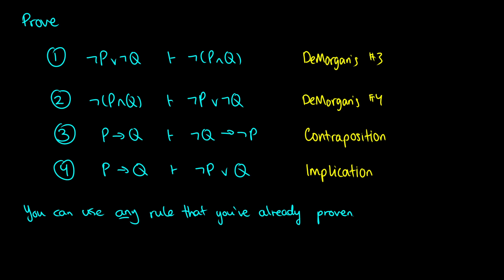In this video we're going to prove a few more derivable rules using pretty much anything we've done before. We can use modus tollens, hypothetical syllogism, disjunctive syllogism, or any of DeMorgan's laws from the last video. We can use the fact that ¬P∨¬Q is proved by ¬P∧¬Q. As we go through the sequence, if we do 2 we can use 1, if we do 3 we can use 2 and 1, if we do 4 we can use 3, 2, and 1, and so on.